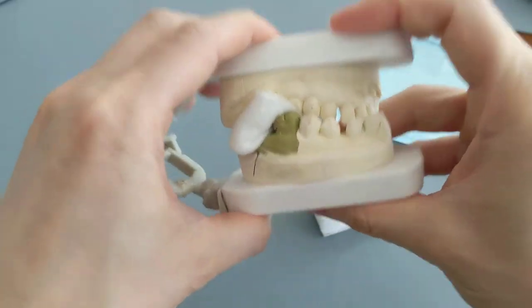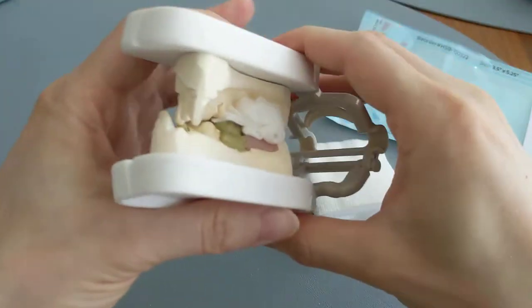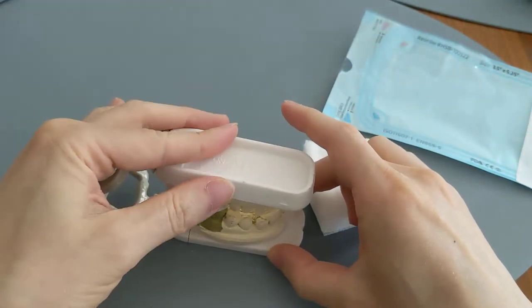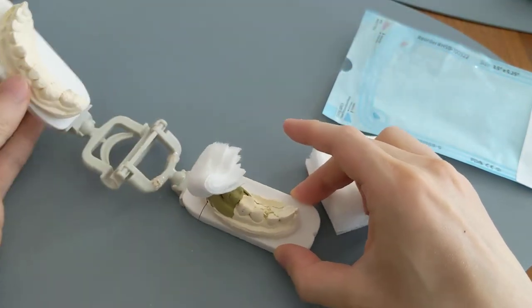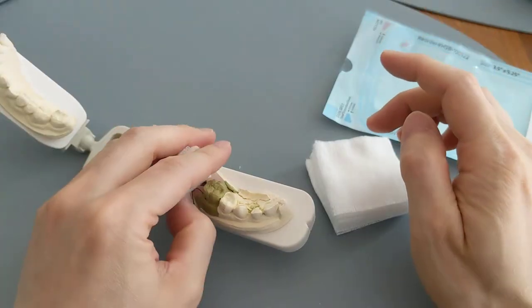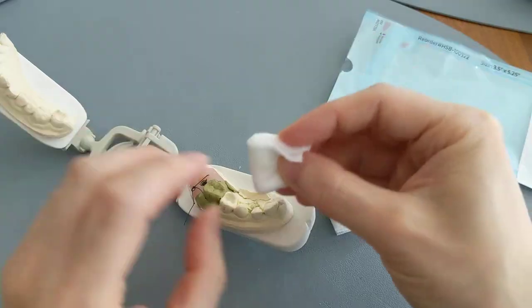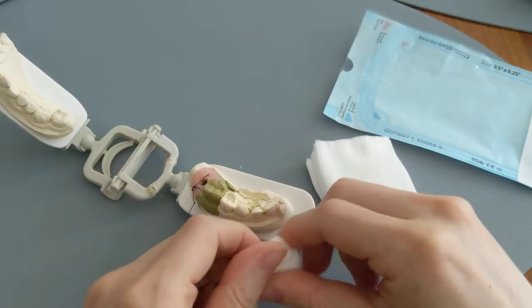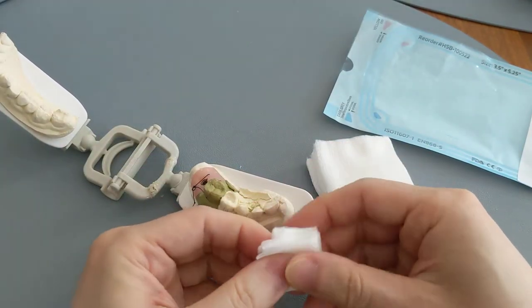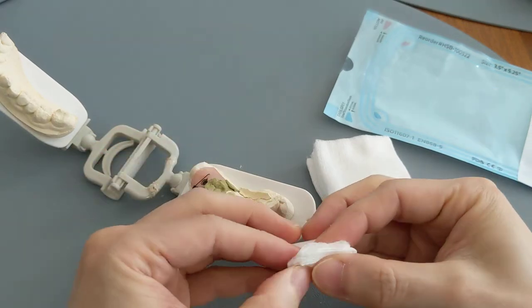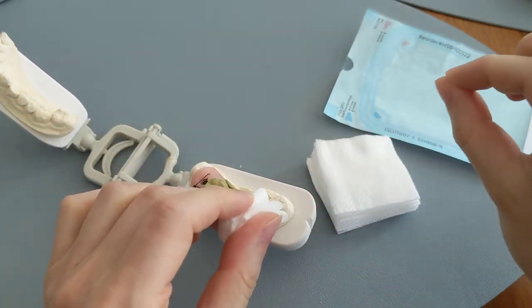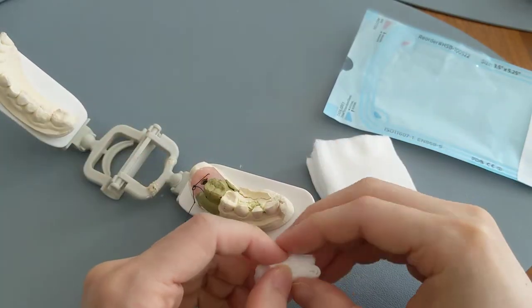Place it over the socket, bite down with firm pressure for 20 to 30 minutes, then switch out to a new one every 20 to 30 minutes until it stops bleeding. On average, it takes about two to three hours for it to slow down to a really slow ooze. At that point you can stop.